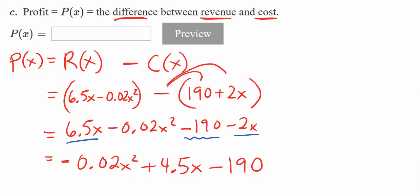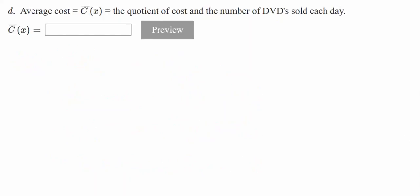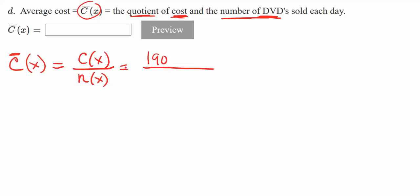Part D: the average cost. The cost equation with a bar over the C, called hat C or bar C, means it's the quotient - we're dividing. The quotient of cost and the number of DVDs. Going back to the original problem, the number of DVDs was n(x). The cost function was 190 plus 2x, and n(x) was just x. So we can write it as (190 plus 2x) over x, or as 190/x plus 2. Either form is fine.